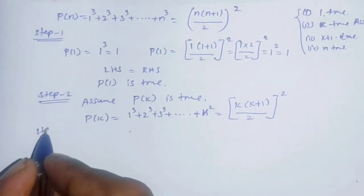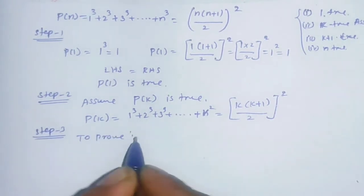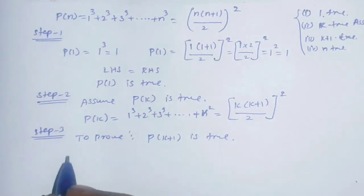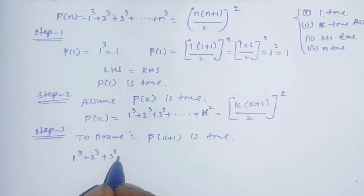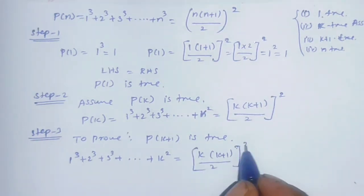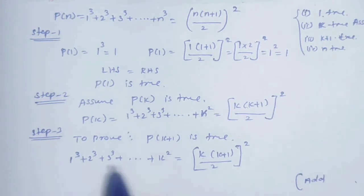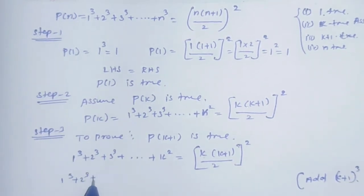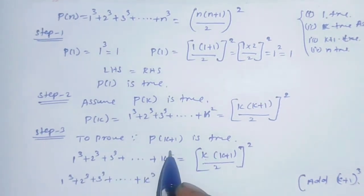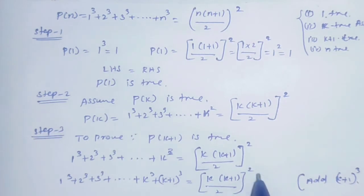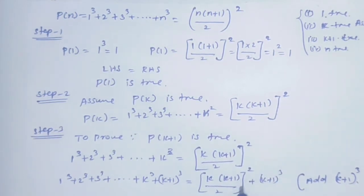Step 3: We will prove P(k+1) is true. Starting from 1³ + 2³ + 3³ + ... + k³ = [k(k+1)/2]², we add (k+1)³ to both sides: 1³ + 2³ + 3³ + ... + k³ + (k+1)³ = [k(k+1)/2]² + (k+1)³.